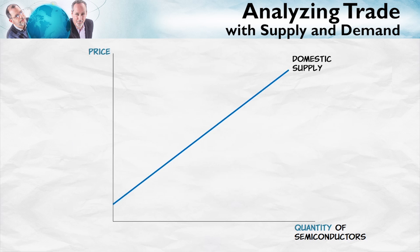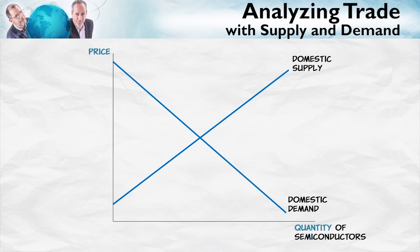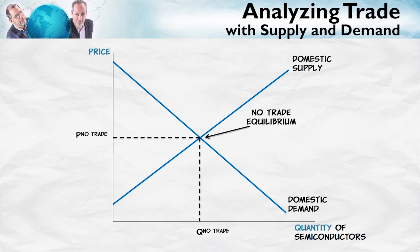Here is the domestic supply curve — this is the supply curve of the home country firms. If we're thinking about the U.S., this is the supply curve from U.S. firms. Here's the demand curve — domestic demand from U.S. consumers. If we had no international trade, we would find the equilibrium where the quantity demanded equals the quantity supplied.